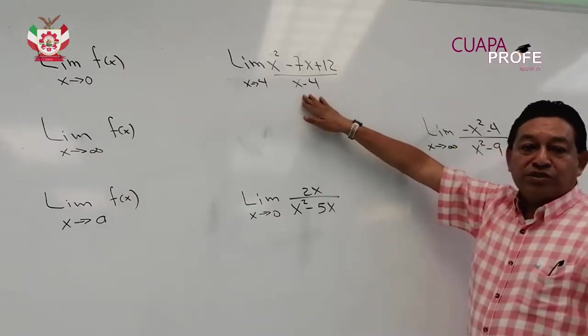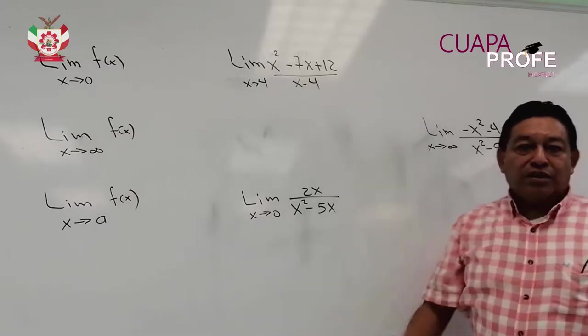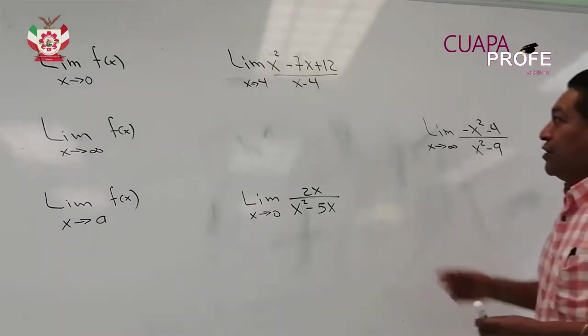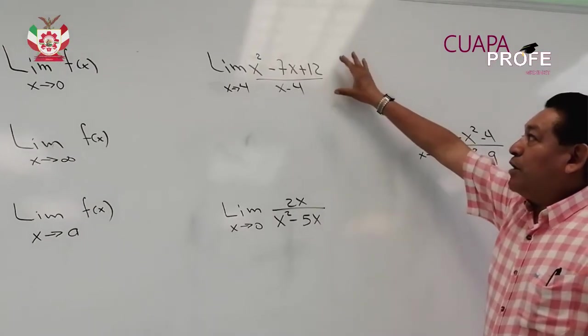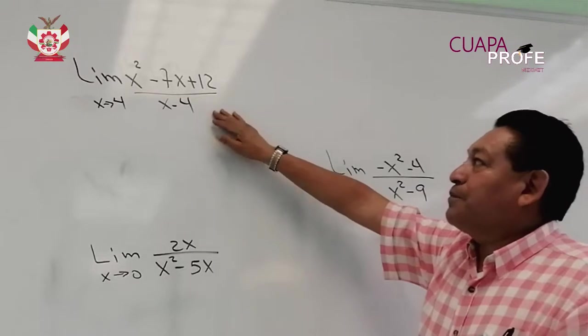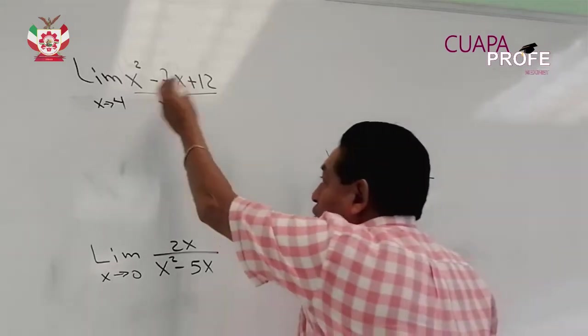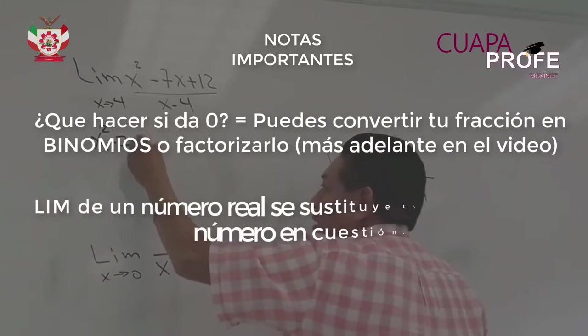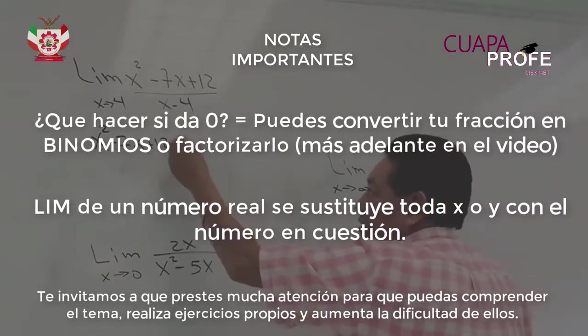Por lo tanto, no podemos obtener dicho límite. Si sustituimos, el resultado nos arroja que no existe. Entonces, ¿qué es lo que tenemos que hacer? Lo que tenemos que hacer es observar y ver si podemos hacer alguna maniobra algebraica para poder dejar que este límite no se indefina. Podemos factorizar de la siguiente manera. En el numerador tenemos x cuadrada menos 7x más 12. Este es un trinomio y lo podemos factorizar.